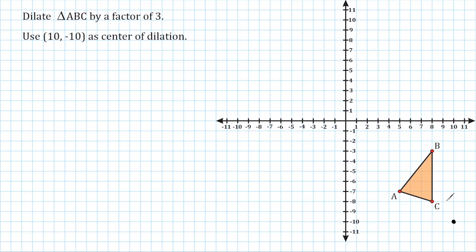So the strategy that I'm going to use to dilate this triangle is by using slope. Slope is the relationship of the change in Y values compared to the change in X values between two given points — it's a measure of how steep a line is. So let me just show you how this works.